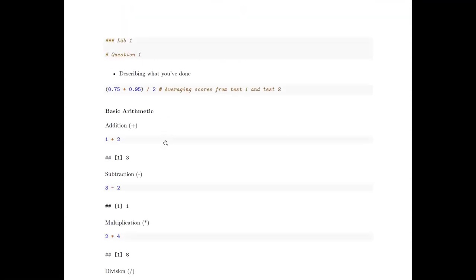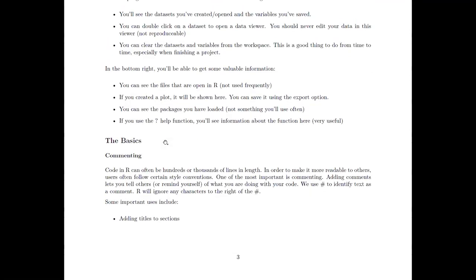Some of the basics of working in R — first is commenting. If you write a whole bunch of code, it can be hard to figure out what's happening, and someone else reading your code might not know why you're using a certain function. You might also confuse yourself. So we use comments to identify what we're doing and to organize our scripts, making them more legible. This fits with common norms for how you should structure scripts in R.